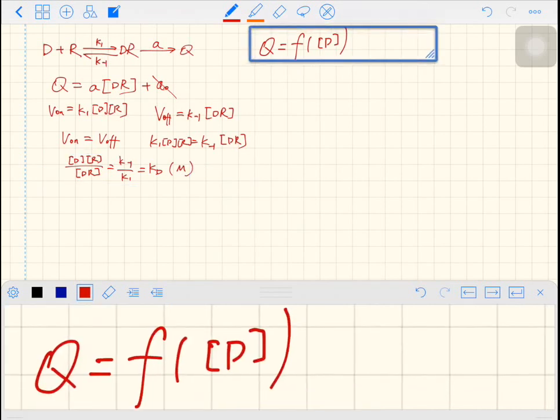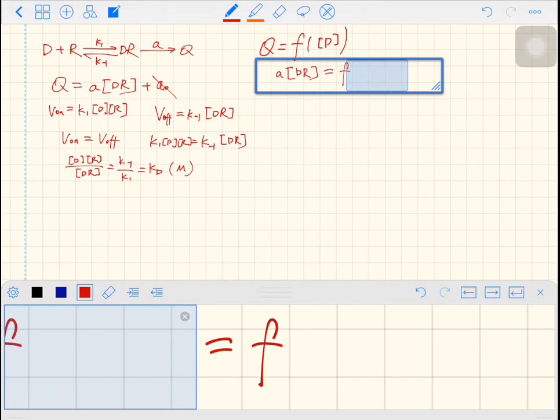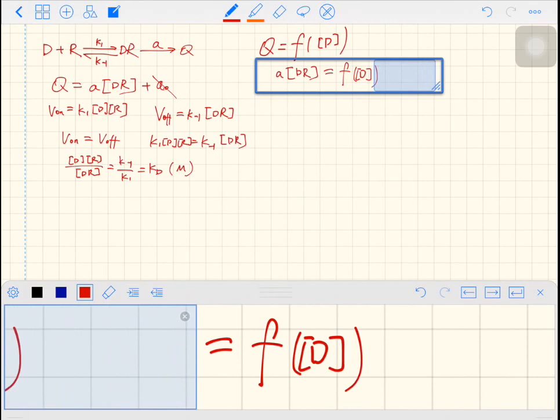Now, let's go back to the basic theory. Q is a function of the dose. As we said, Q can be written as A times DR. Please recall that A is the intrinsic activity. So A times DR is a function of the drug concentration.